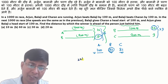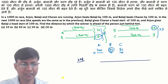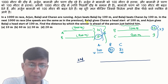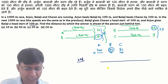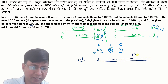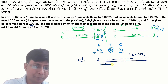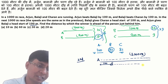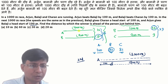Now the second case is an important one. The next 1000-meter race involves all three participants with a twist. Balaji gives Charan a head start of 100 meters, and Arjun gives Balaji a head start of 100 meters. This means Arjun starts from the starting point and travels 1000 meters, but Balaji starts 100 meters ahead — so Balaji only needs to travel 900 meters.